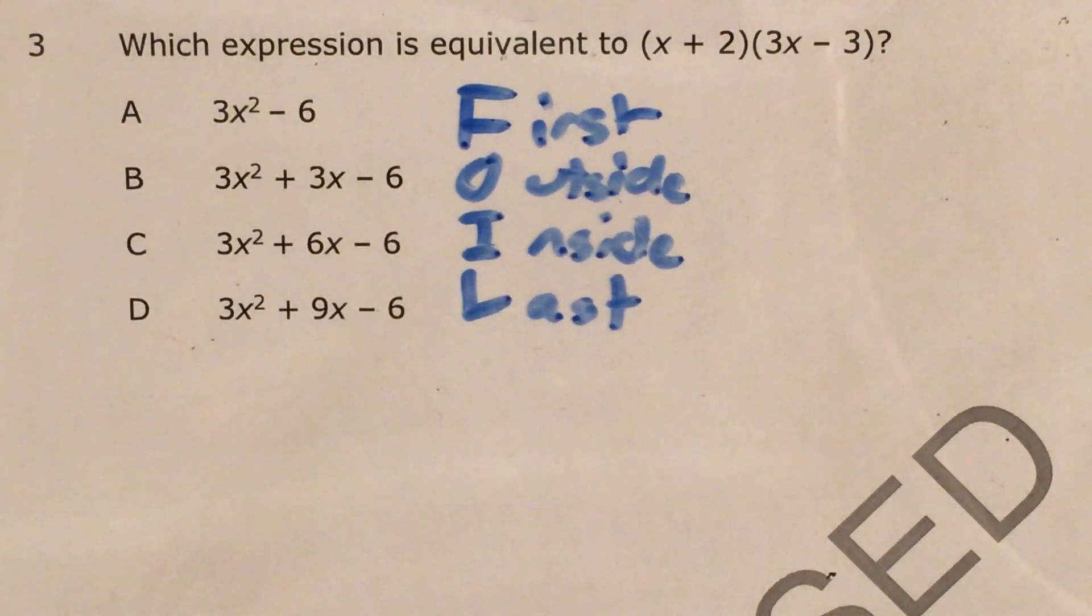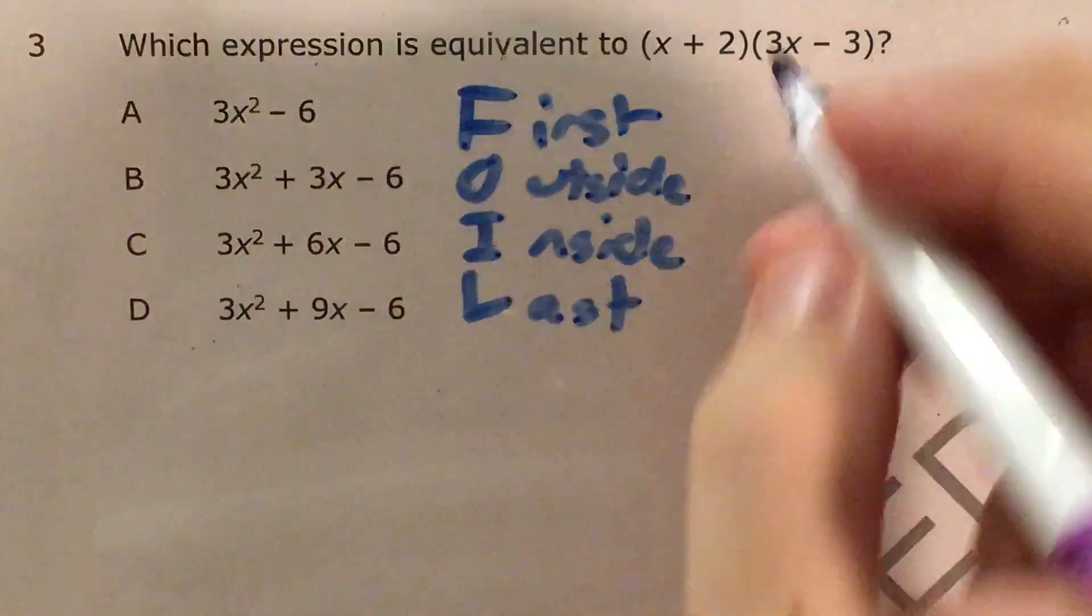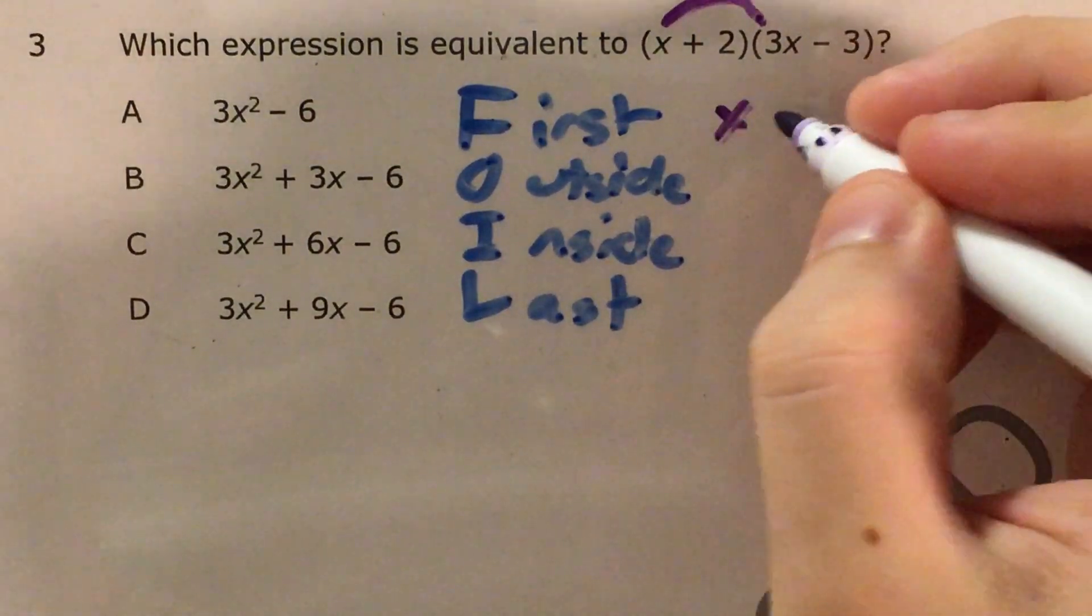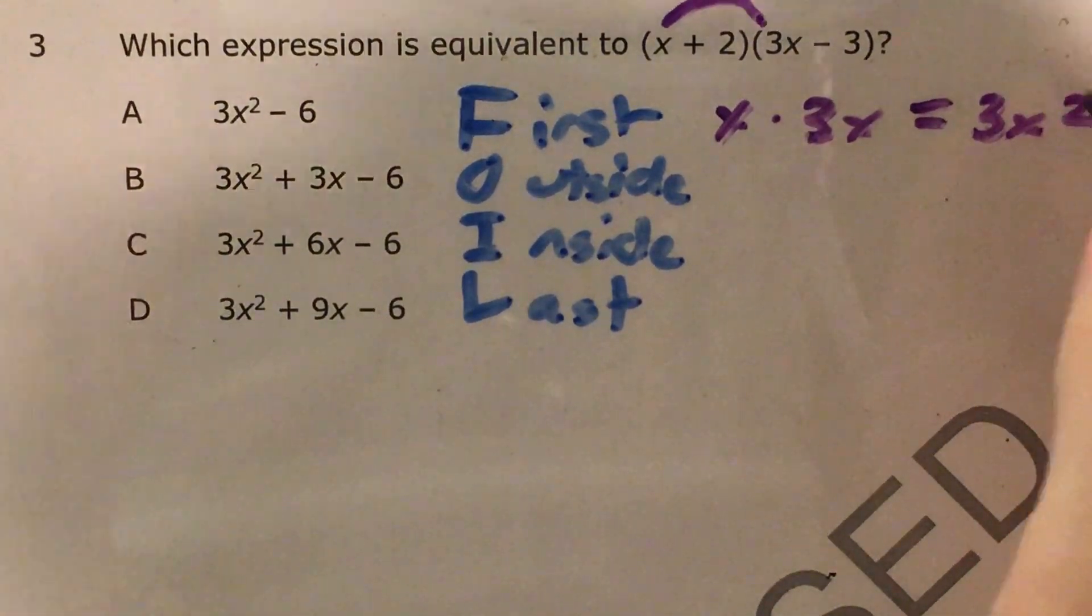Now how that's going to work in this particular problem is that I'm going to take every number on the left and multiply it by every number on the right, starting with my first numbers. x times 3x is going to give me 3x squared.